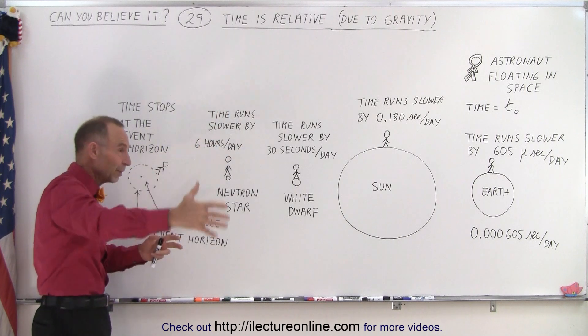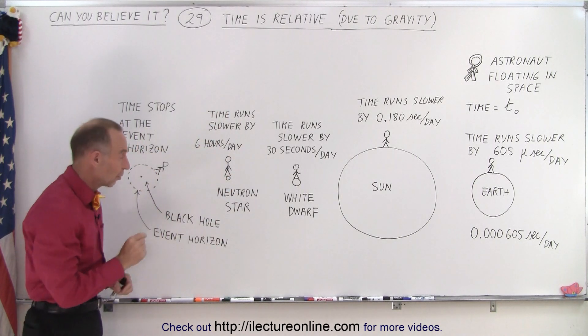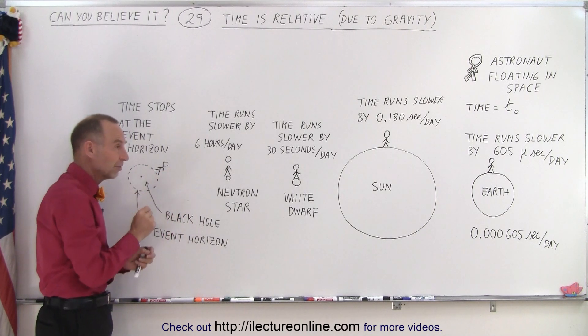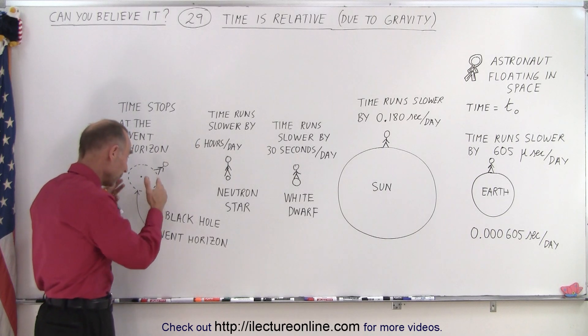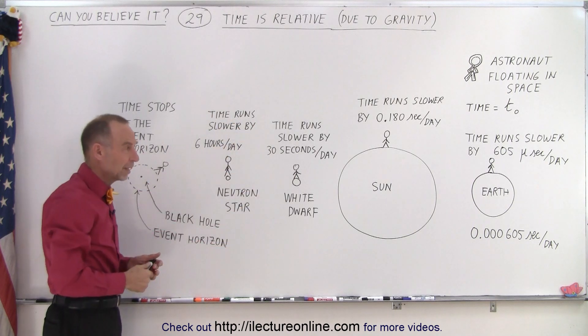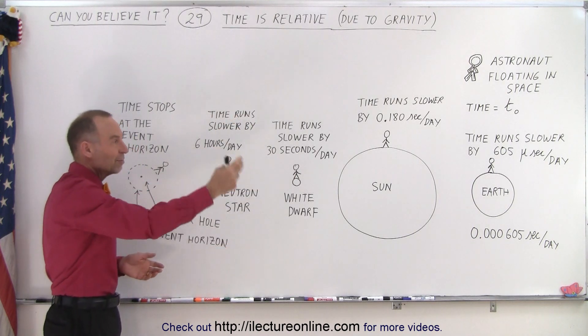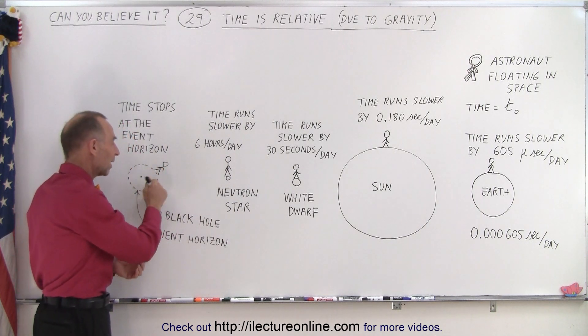The rest of the universe would simply continue on in its normal time. Time here would simply slow down. So as you're getting closer and closer to the event horizon, of course, you'd have to withstand those enormous gravitational forces, but if you could, well, your time would slow down tremendously while the rest of the universe would just continue. And life on Earth would just continue, millions of years would pass in the blink of an eye if you're near a black hole.